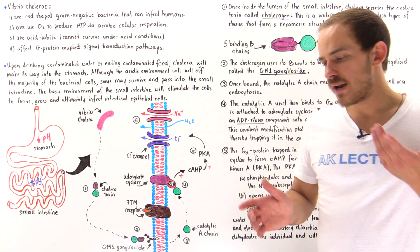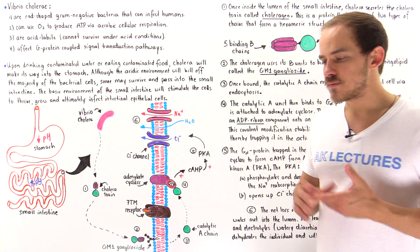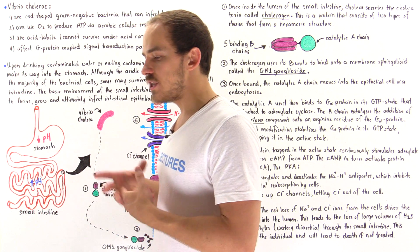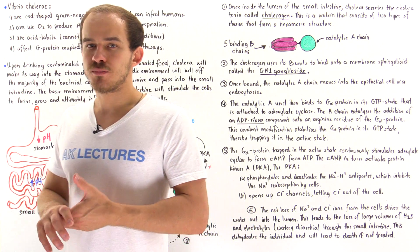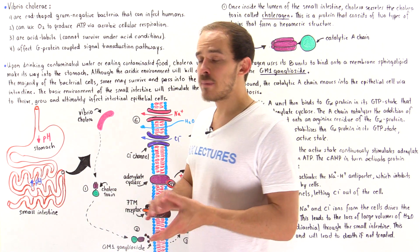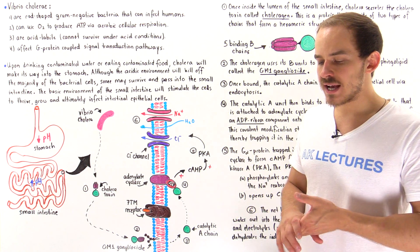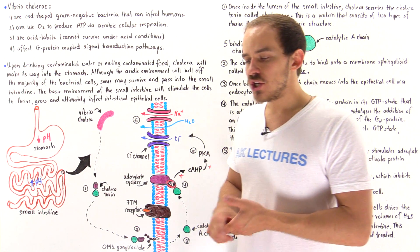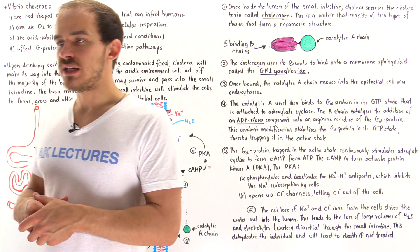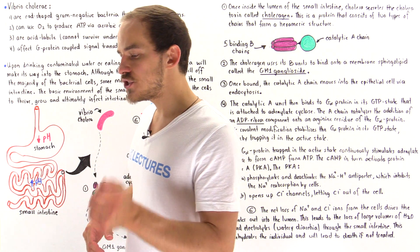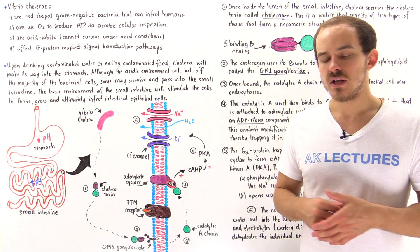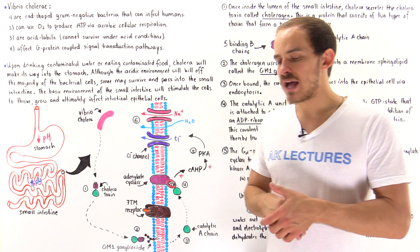The cells of our body use many different types of signal transduction pathways, and some of these pathways utilize G-proteins. For instance, we know that the epinephrine pathway and phospholipid cascades used by the cells of our body utilize G-proteins, and because of that, we call these pathways G-protein-coupled signal transduction pathways.